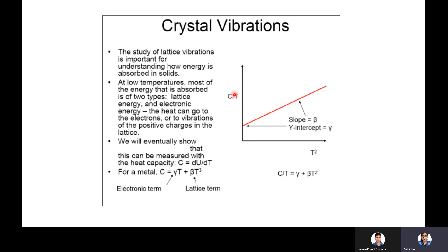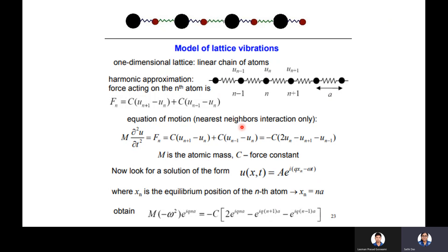This is the graph of C/T versus T². The slope and the intercept on the C/T axis can be identified from this graph. So in a crystal, we have to consider two terms: one occurring due to the electrons at their energy levels, and another occurring due to the lattice vibration energy levels.